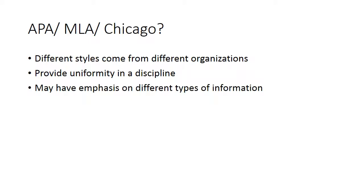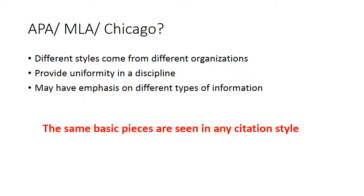In general, each of these provides uniformity in a discipline. They may have an emphasis on different types of information depending upon the discipline. The same basic pieces are seen in any citation style, so it doesn't matter what citation style you have to format your final paper in, as long as you're getting all of the information.